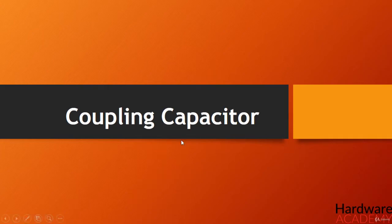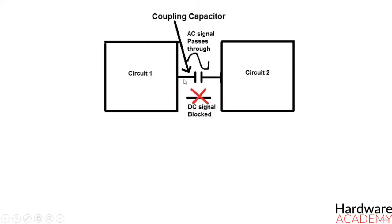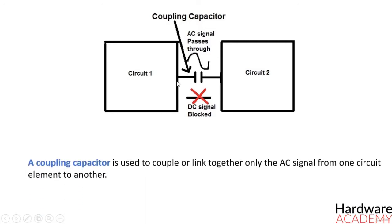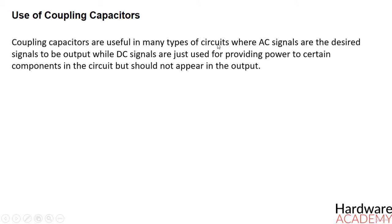Let's begin and first we will talk about coupling capacitors. A coupling capacitor is a capacitor which is used to couple or link together only the AC signal from one circuit element to another. The capacitor blocks the DC signal from entering the second element and as a result only passes the AC signal.